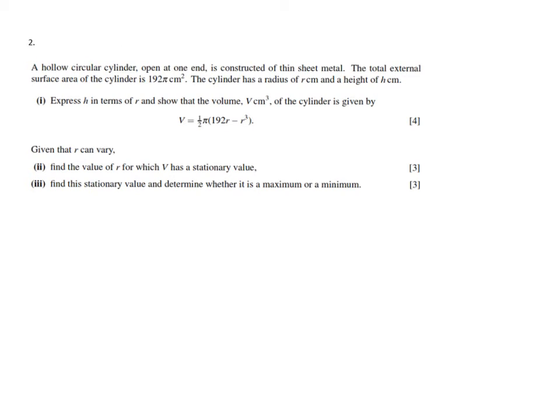So what's going on? It says a hollow circular cylinder open at one end is constructed of thin steel metal. Let me make a quick sketch of that - we have a cylinder and it's open at the top. The total external surface area is 192π cm². The cylinder has a radius of r and a height of h.